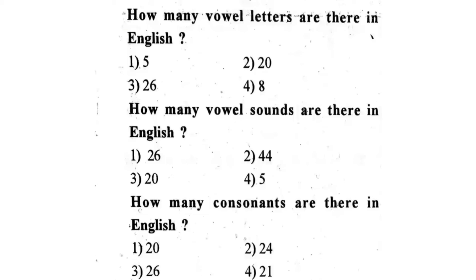Next question: How many vowel letters are there in English? First one, 5. Second one, 20. Third one, 26. Fourth one, 8. The correct answer is first one — 5.